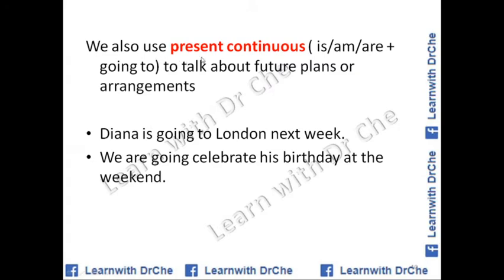We also use present continuous or 'is/am/are going to' to talk about future plans or arrangements. For example: Diana is going to London next week — when it is confirmed, because she has a visa and has purchased her air ticket, she is going to London next week. We are going to celebrate his birthday at the weekend.